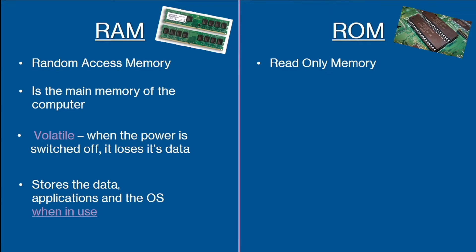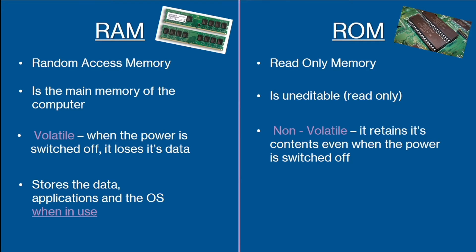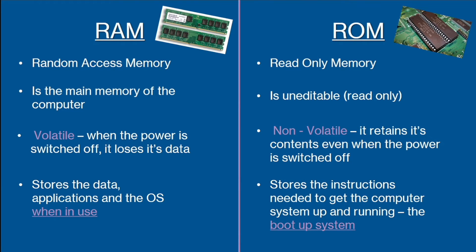On the other hand, we have ROM, which is read-only memory. This is a form of memory that can retain its contents even when the computer is switched off, meaning it's non-volatile. Also, as the name suggests, ROM is read-only, meaning it's uneditable. This is ideal for ROM's purpose, which is to store the instructions needed to get the computer system up and running, so it's used for the boot system. This is because it cannot be overwritten by the computer.